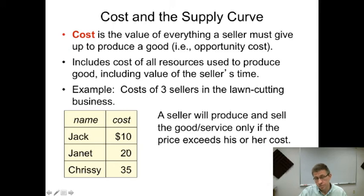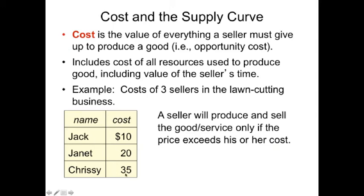Janet's cost is twenty. So if it's twenty or more, Janet will offer her service, and Chrissy at thirty-five. So thirty-five is Chrissy's measure—willingness to sell, willingness to accept.